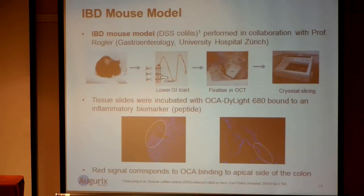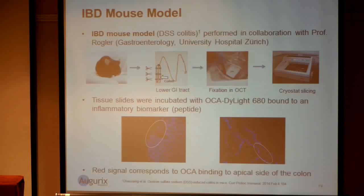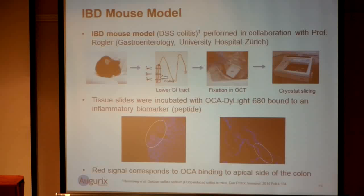Here are the results from the binding experiments. The first is the IBD mouse model — the DSS colitis model elaborated by Professor Rogler at the University of Zurich. The idea is to harvest the colon, do a fixation, cryostat the tissues, and then incubate them with the oral contrast agent bearing a peptide specific for inflammation in mice with the DyLight dye. We analyzed everything under a fluorescence microscope.